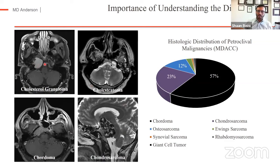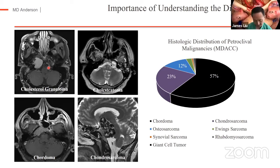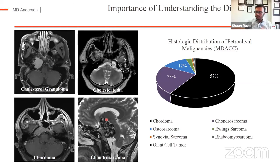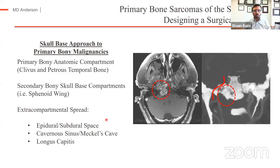On one hand, you can see extradural benign pathologies such as cholesterol granulomas and cholesteatomas, but also malignancies such as chordomas and chondrosarcomas. Understanding the diagnosis is really a key factor in designing a surgical strategy. For a cholesterol granuloma where the goal is to marsupialize the cyst, you really don't need an extensive skull-base approach. For a chordoma or chondrosarcoma, the goals are very different.